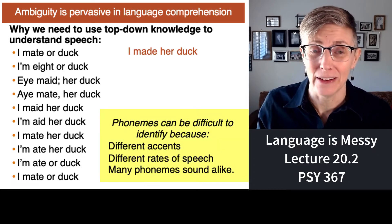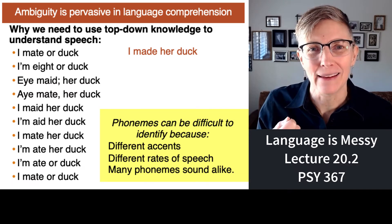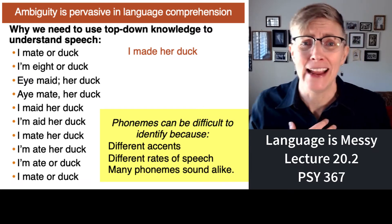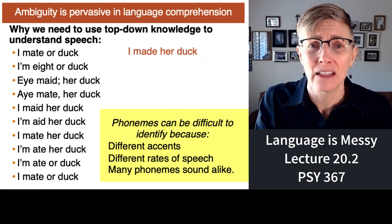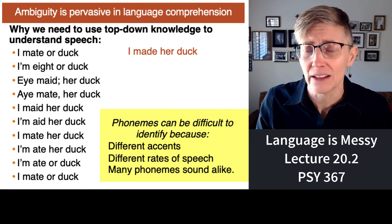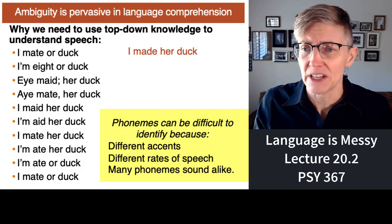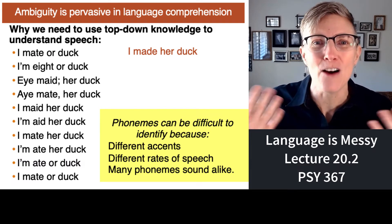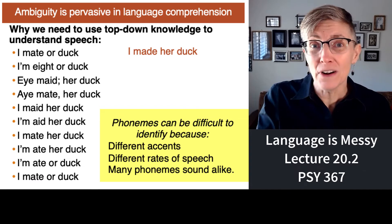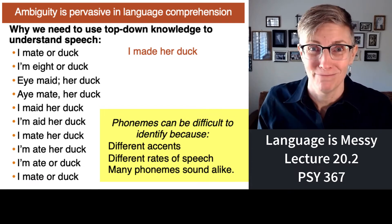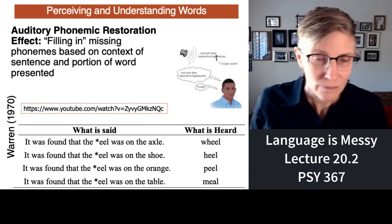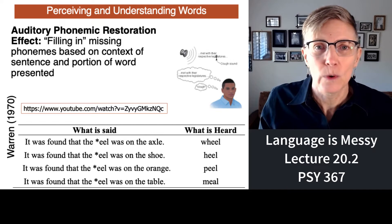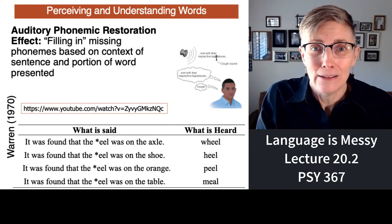Phonemes are really difficult to identify because the sounds we make change all the time. Each of us has our own accent, and that creates different-sounding phonemes. We all speak at different speeds, and many phonemes sound alike. The phonemes I use in the morning are going to be different from the ones I use at night when I'm tired. So it's very hard to detect phonemes — and if phonemes are the building blocks of language, how do we understand what anybody is saying?